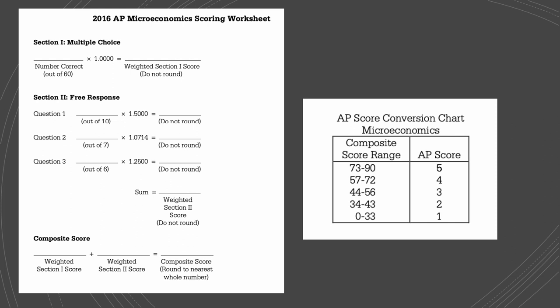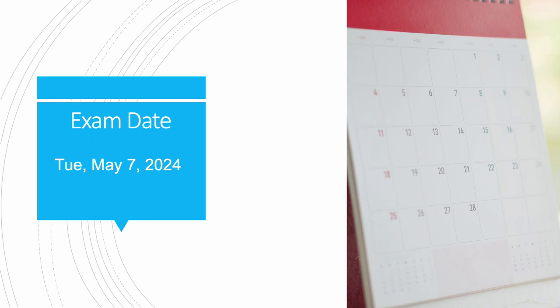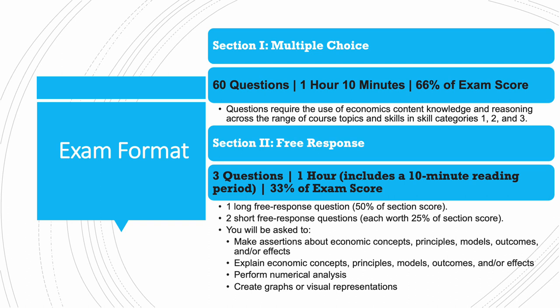There's a big range to receive a 5 or a 4. The exam date for the 2024 exam is Tuesday, May 7th. The exam format has two sections. The multiple choice section has 60 questions; you've got one hour and 10 minutes — about 70 minutes — and it's 66% of the exam score, which is two thirds. Questions require you to use economic content knowledge and reasoning across the range of course topics and skills in skill categories one, two, and three that we discussed.